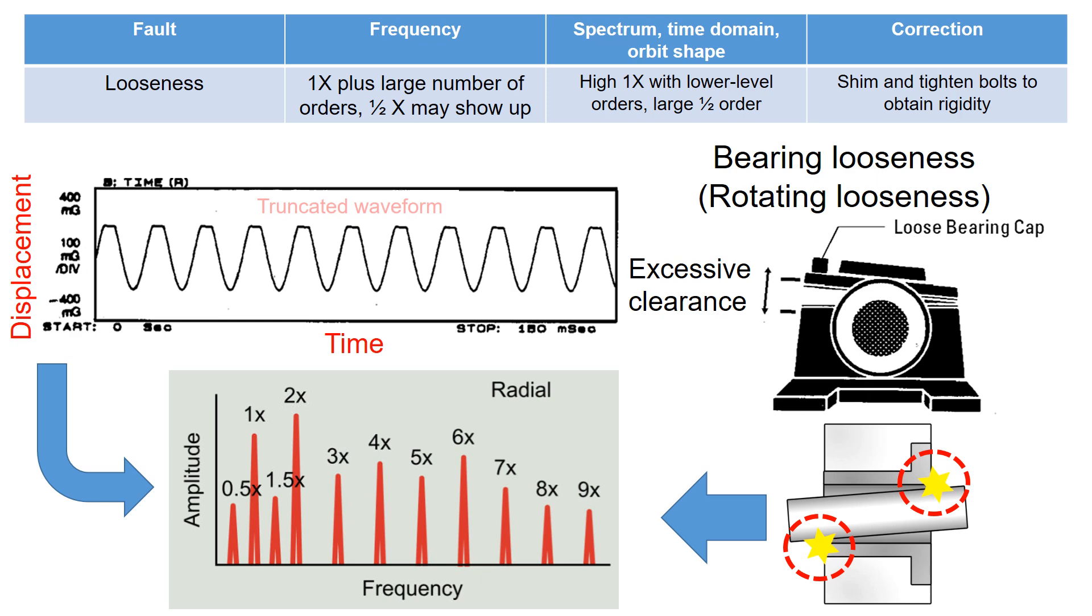So, returning to this slide, if your machine vibration measurements display multiple harmonics—1x, 2x, 3x, and so on—in the frequency spectrum, it indicates the presence of rattling motion within the machine.